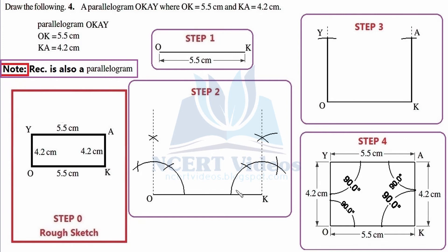At vertex K we follow the same steps as at vertex O. Place the needle at K and construct an arc intersecting line segment OK. Place the needle at the intersection and construct another arc, then again place the needle to intersect the previously constructed arc. Repeat to get the final intersection. This intersected point and vertex K give us 90 degrees. Mark it with dotted lines — these are both rays. Try to construct 90 degrees at vertex K yourself. That completes step number two.